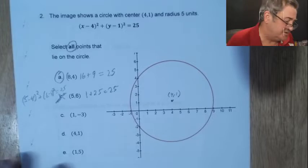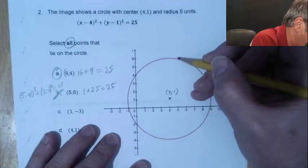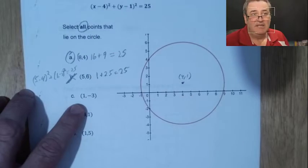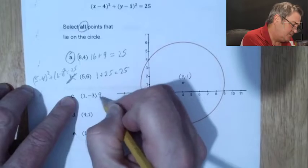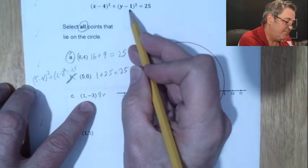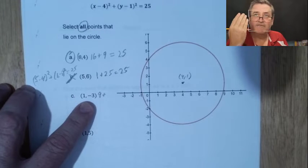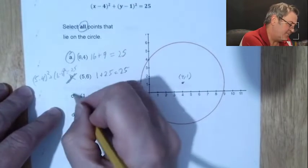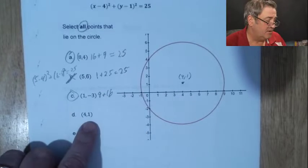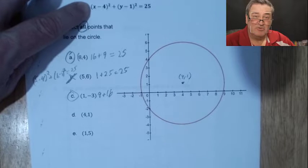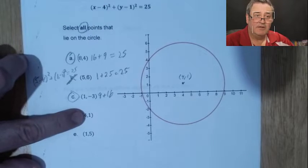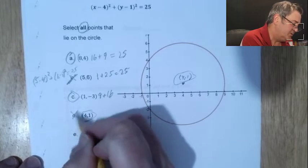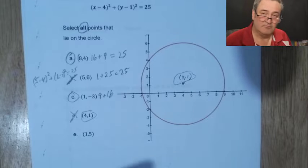Point B is just outside the circle. For point (1, −3): (1 − 4)² + (−3 − 1)² = (−3)² + (−4)² = 9 + 16 = 25. That works — it's on the circle. For point (4, 1): (4 − 4)² + (1 − 1)² = 0 + 0 = 0. That's not 25 — but wait, that's the center of the circle. Of course it's not on the circle; it's the center.